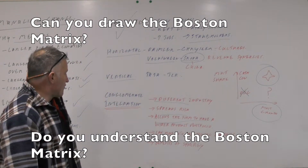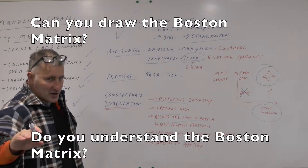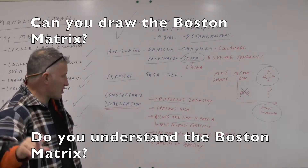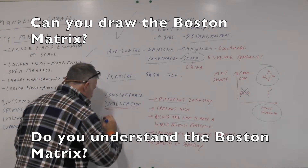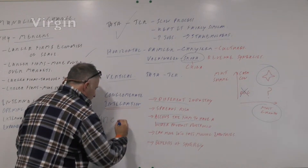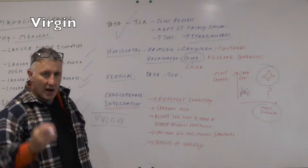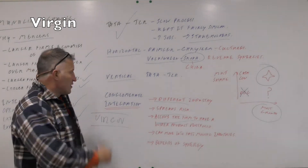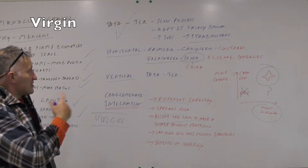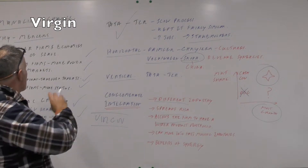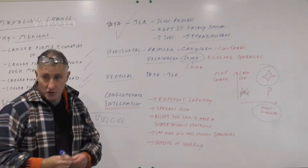There are other examples of firms that move into any industry going. The classic case would be Virgin — it doesn't always succeed, but it has around 360 companies all working under the Virgin brand. That is the picture of managing change in relation to this part of the course.